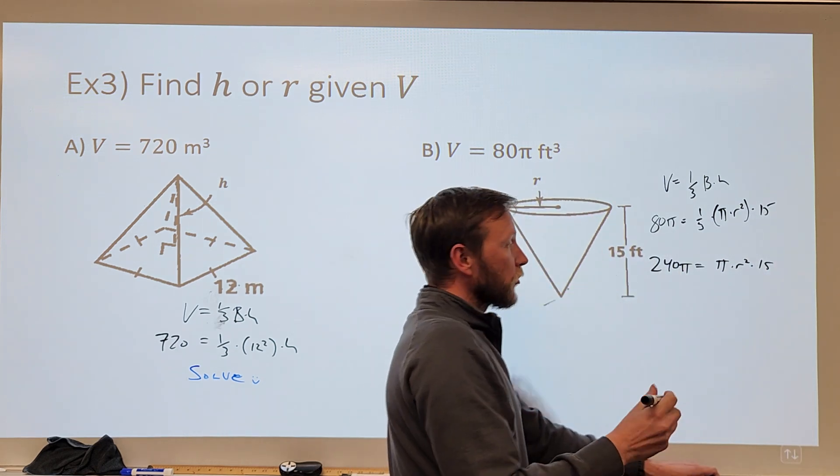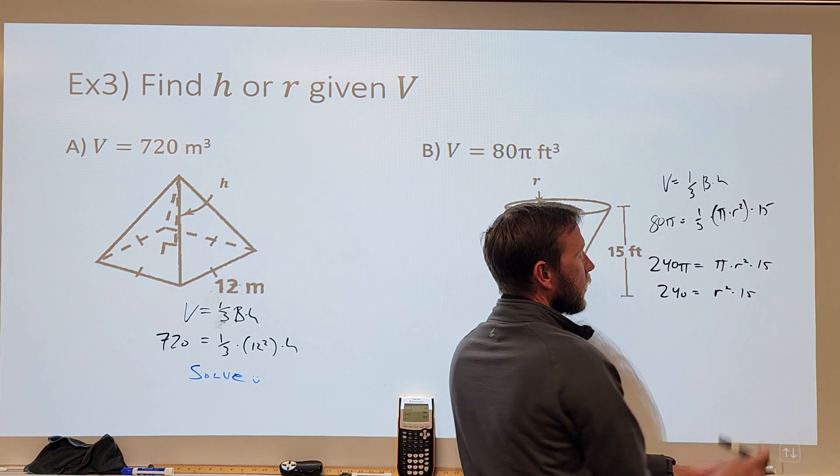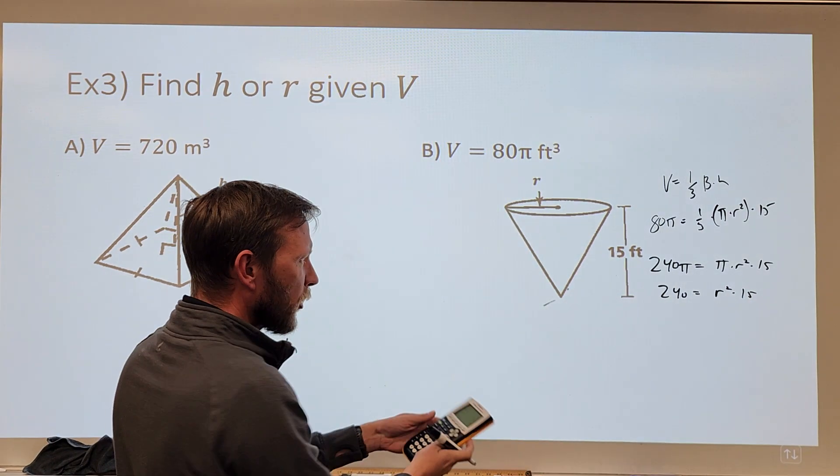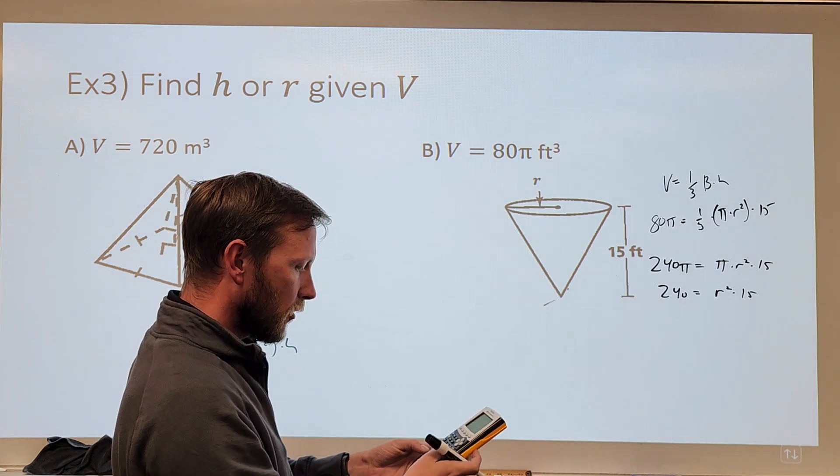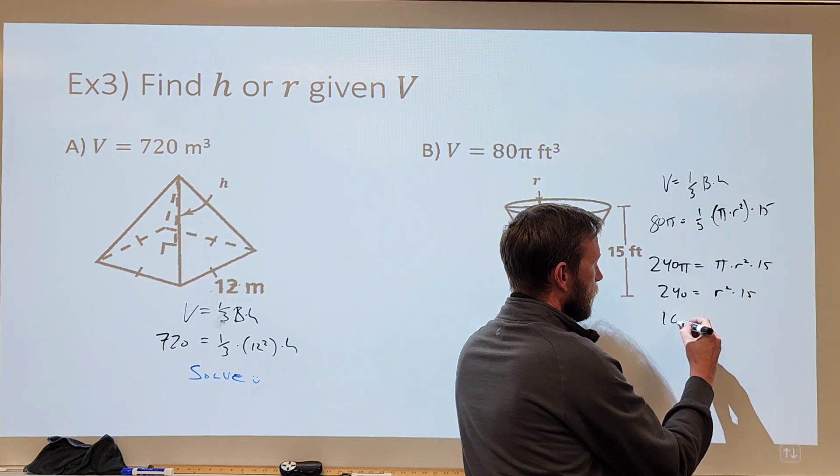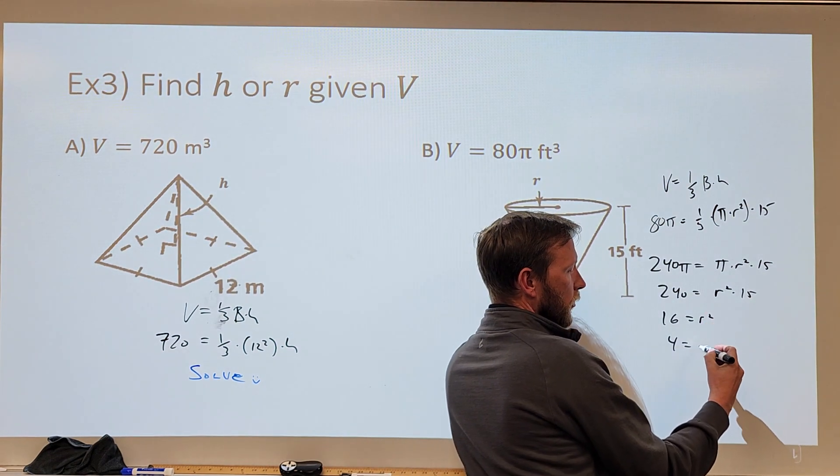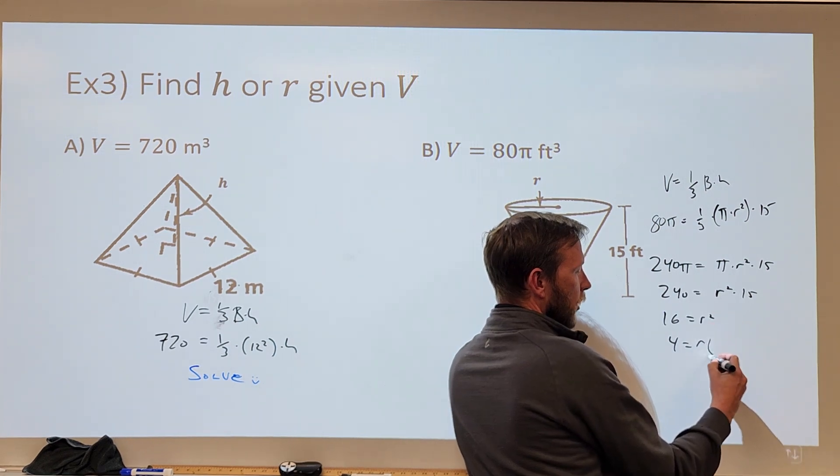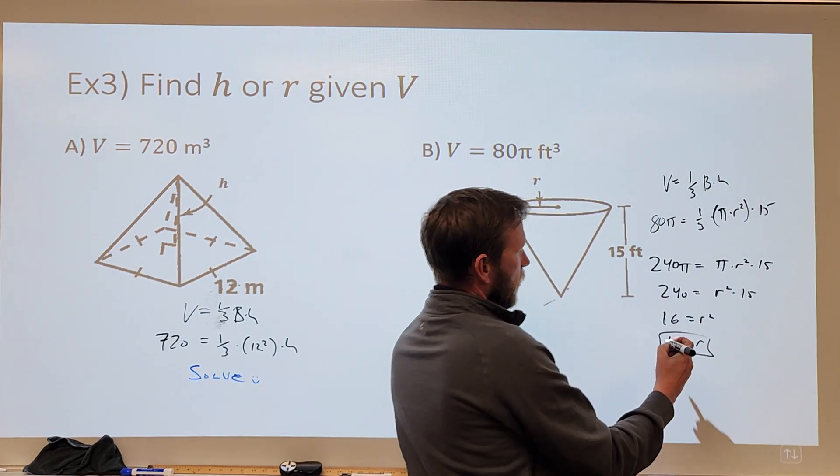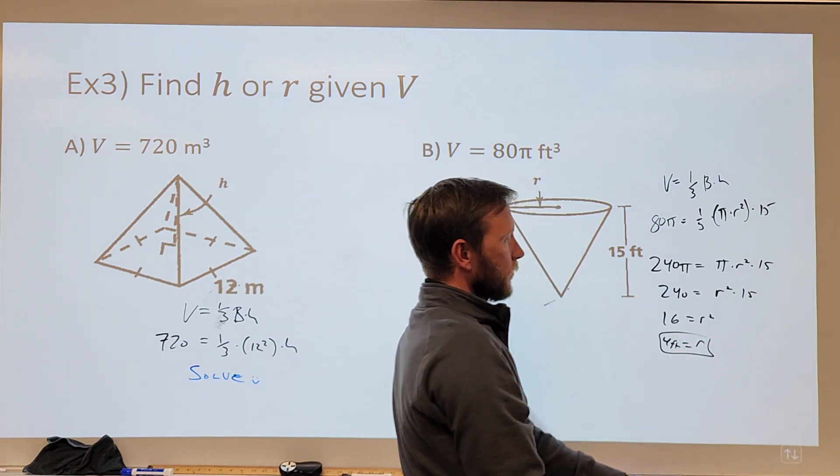I can divide both sides by pi. 240 is equal to r squared times 15. I can divide both sides by 15, which gives me 16. And then I can take the square root on both sides to find out that the radius is 4 feet.